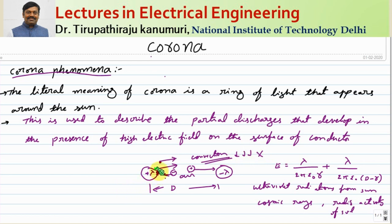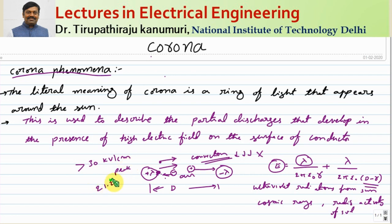If the voltage is increased such that the electric field intensity at the surface of the conductor exceeds 30 kV per centimeter (peak), or 21.2 kV RMS, the air will start breaking down. This means the charged particles already present — through which convection current flows — acquire sufficient energy and start accelerating at a faster rate, bombarding neighboring atoms.